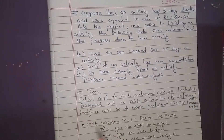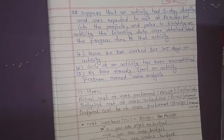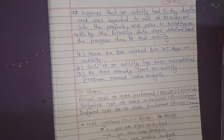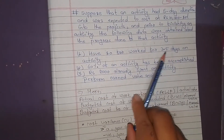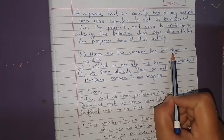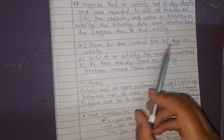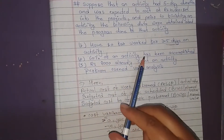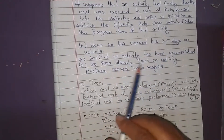RS 8,000 has already been spent on the activity. So for our project: original duration is 5 days, actual time elapsed is 3.5 days, 60% of the activity is complete, and RS 8,000 has been spent. We perform Earned Value Analysis on this data.